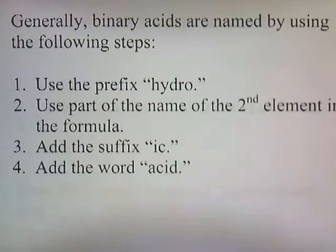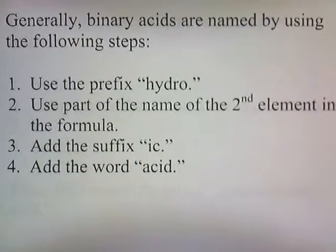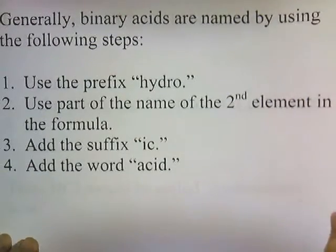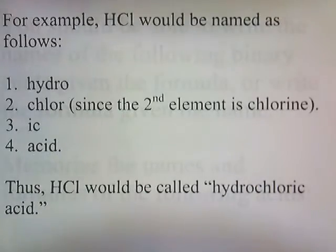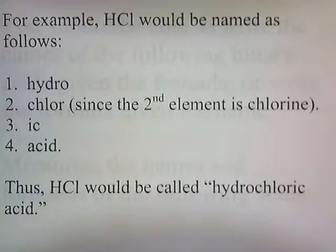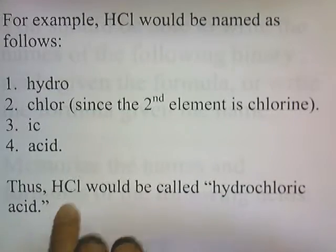Use the prefix 'hydro', use the part of the name of the second element in the formula, add the suffix '-ic', and add the word acid. For example, HCl would be named as follows: you would start with the word hydro, then add 'chlor' since the second element is chlorine, add the suffix '-ic', and then tack on the word acid. Thus, HCl would be hydrochloric acid.